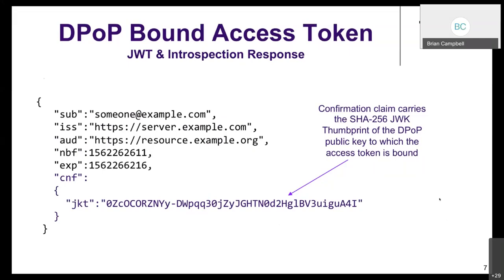The response clarifies: the slide is just an example of what a JWT would look like for interoperability purposes. The token is still opaque to the client. The resource server needs to know the binding — either by reading the JWT confirmation claim, using introspection with the same-named parameter, or doing a database lookup — but these are just the standardized interoperable ways to convey this information.